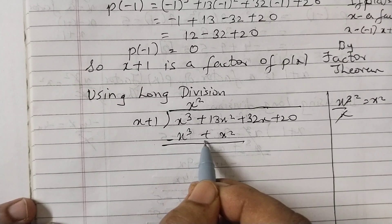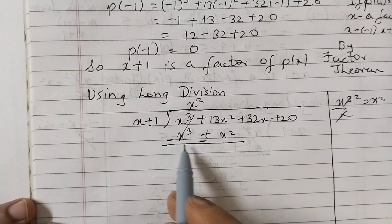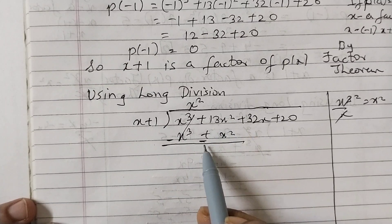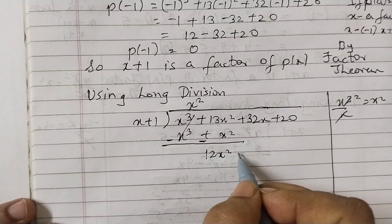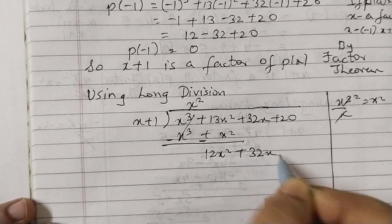x × x² = x³, 1 × x² = x². We will subtract. Sign change. x³ - x³ cancels out. 13x² - x² = 12x². Next term down: 32x.